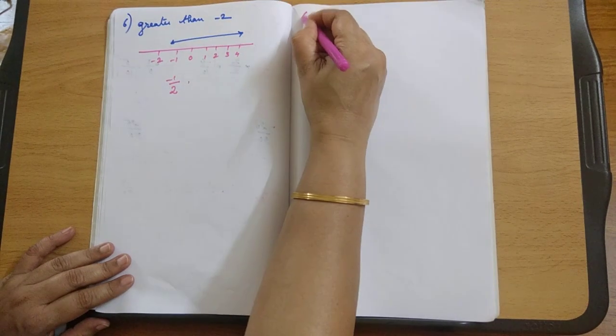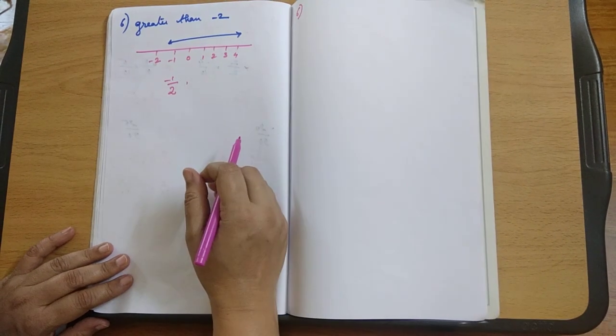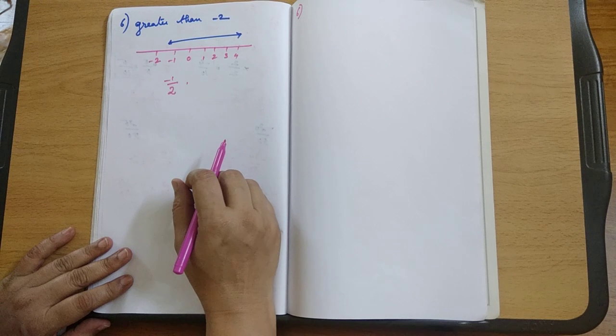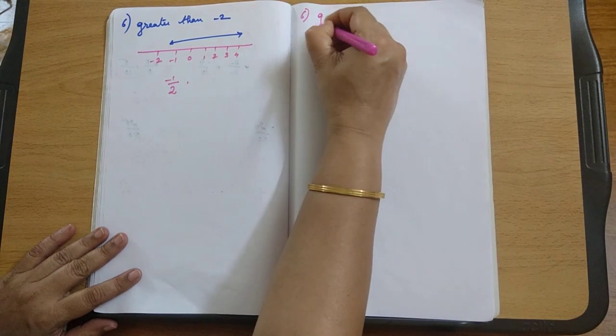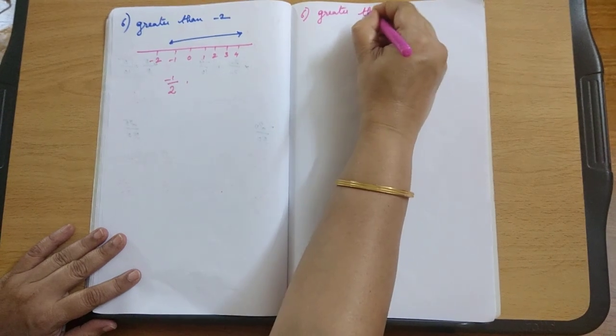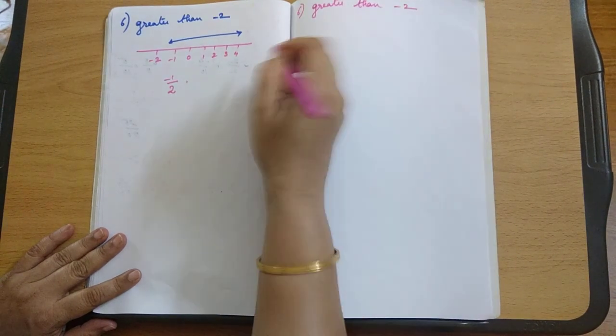Let me explain the sixth sum in exercise 1.2 for you. Find 5 rational numbers greater than minus 2. You are supposed to find 5 rational numbers greater than minus 2.